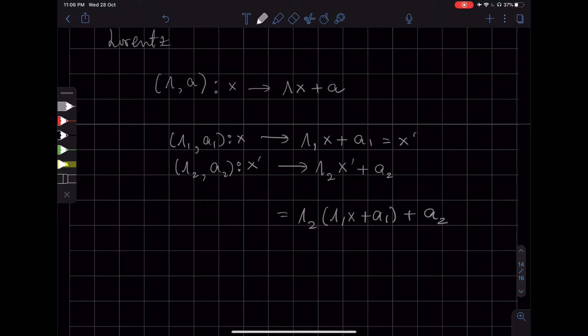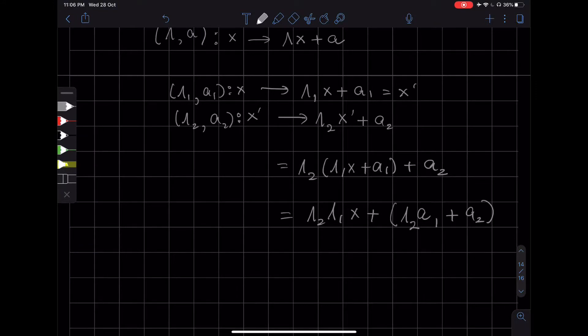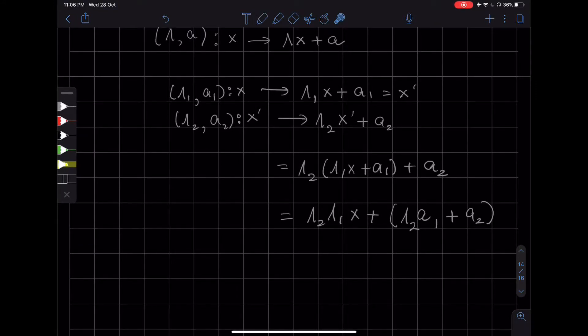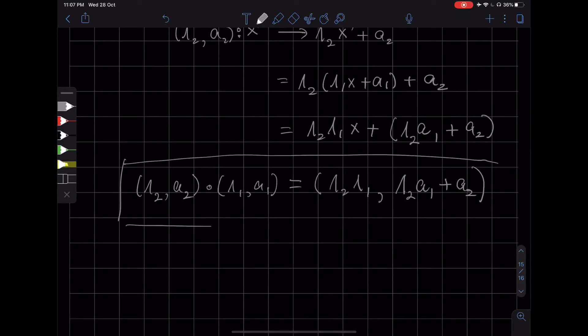So if we now simplify this, we get lambda 2 lambda 1 acting on x plus a translation which consists of lambda 2 acting on a1 plus a2. So we can see that the composition of these two transformations, the first we apply lambda 1 a1 and then we apply lambda 2 a2, that is the same thing as lambda 2 lambda 1, the Lorentz transformation, and for the translation it's lambda 2 acting on a1 plus a2. So this is the group composition law of the Poincaré group.